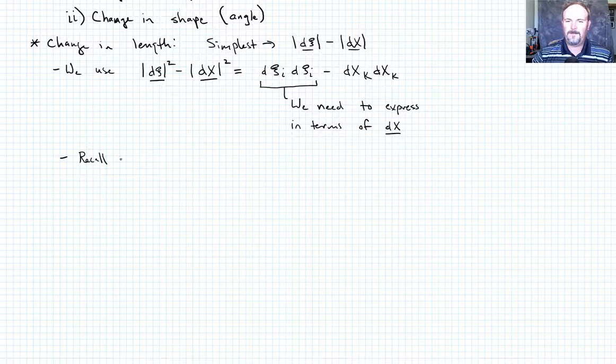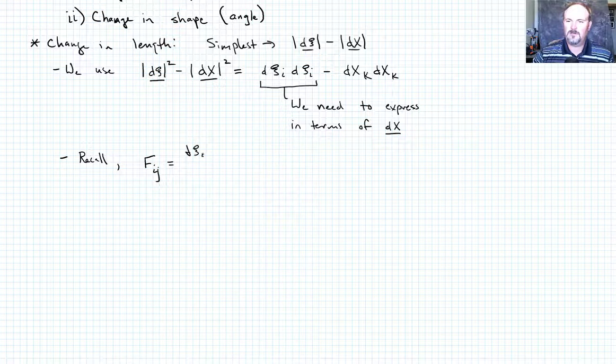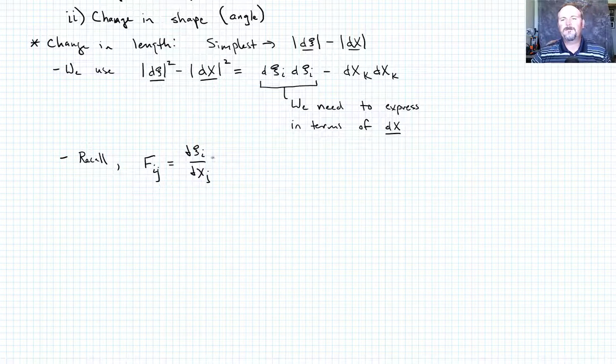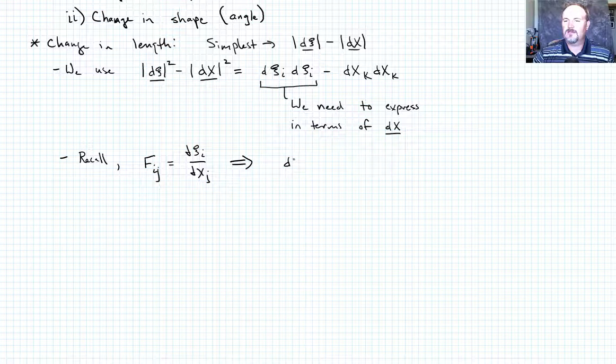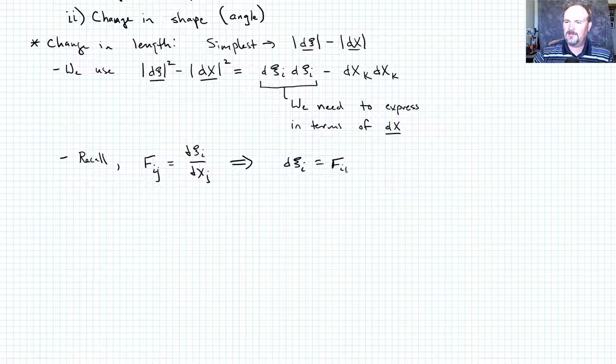Okay, how can we do that? Well, recall the deformation gradient tensor. So recall that we had the deformation gradient tensor that looked like F_ij, which is just by definition the partial of the current divided by partial of the reference. And we also said we could rewrite this as dx_i is equal to F_ij DX_j.